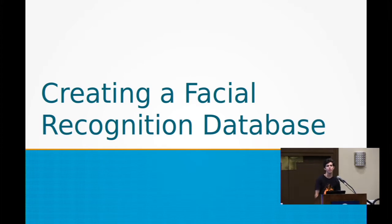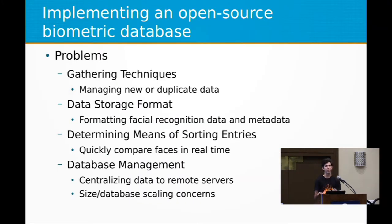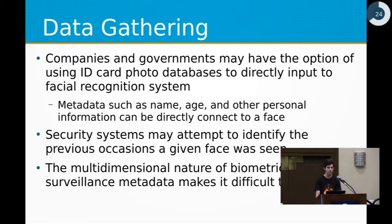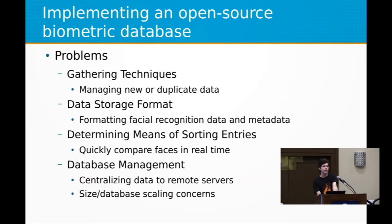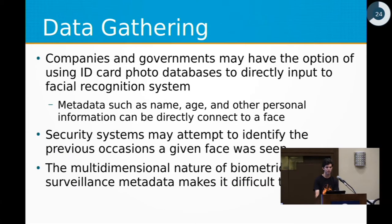One thing which is interesting when coming from traditional data management structures is how do you actually deal with biometric data? Normally with data, you'd have something like an index — you can order alphabetically, by number, by size. When you're comparing faces in a database, you have 128 different measurements that you can't simply take one as the index. This is among some of the other issues with managing all the metadata that comes from taking in different cameras and different sources, correlating people, gathering new faces, and making sure that there aren't collisions. Dealing with biometric data is very new and something that even many government surveillance systems have had documented issues regarding.